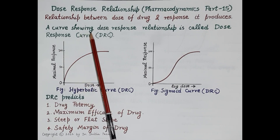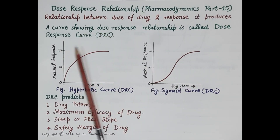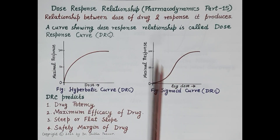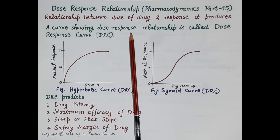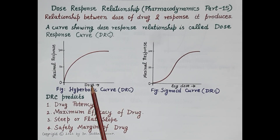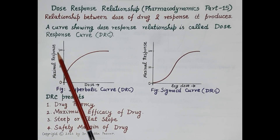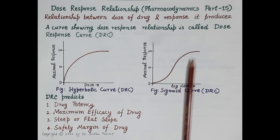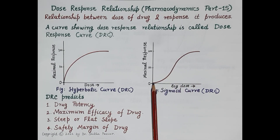A curve showing dose response relationship is called a dose response curve. To investigate the effect of a drug, different doses are administered in a set of population and the responses are observed. When the responses of a drug are plotted against the dose, it shows a hyperbolic curve. When the log dose is used instead of dose, a sigmoid (S-shaped) curve is obtained.